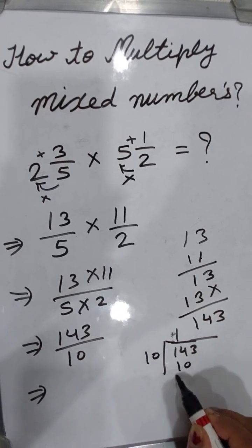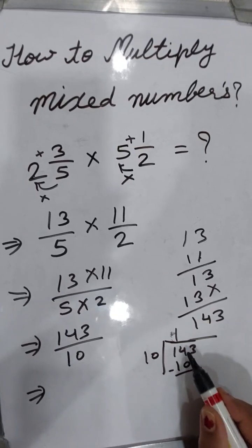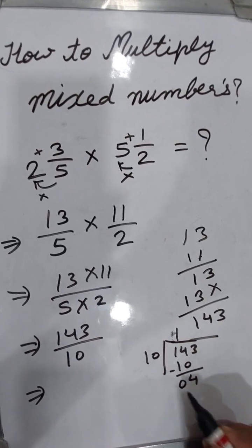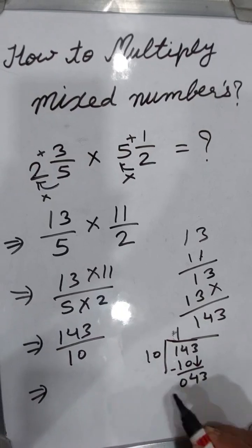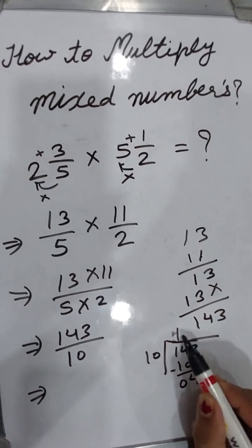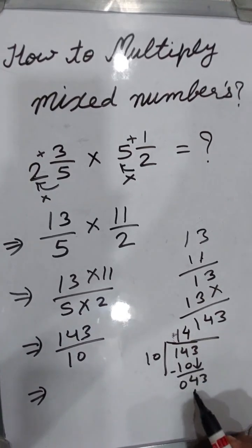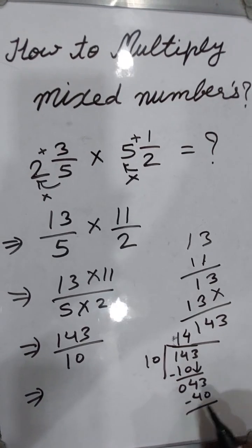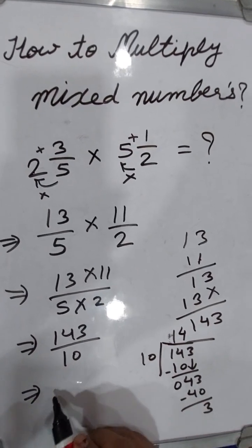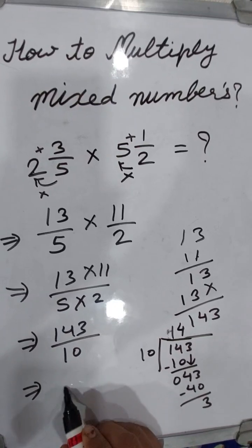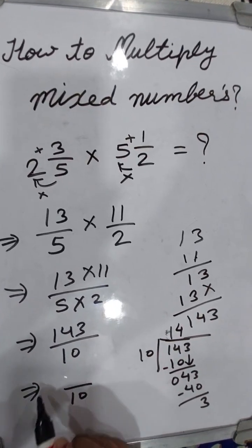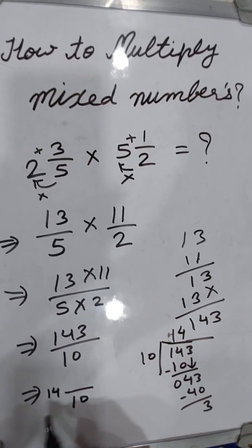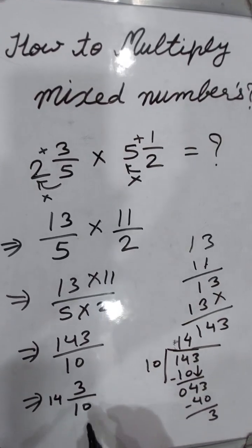10 goes into 14 once, minus 10 leaves 4. Bring down the 3. 10 goes into 43 four times, giving you 14 with a remainder of 3. So you write it as 14 3/10.